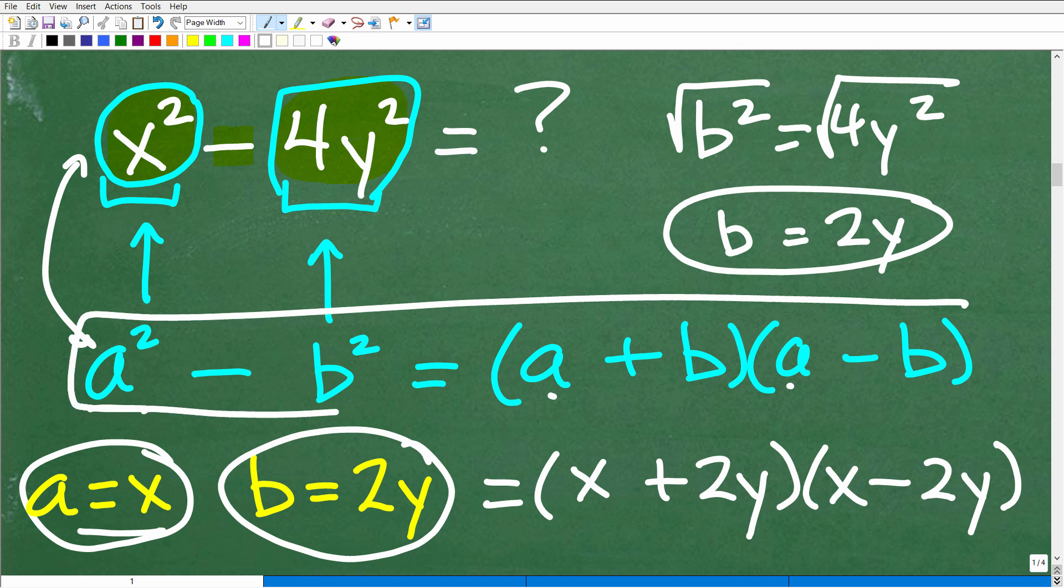Now we just simply need to follow the formula. So a squared minus b squared is going to be a plus b. So what is a? Well, a is x. That's going to be x plus b. b is 2y. And then here we have a minus b. So that's going to be our a is x minus our b is 2y. And we just simply plug in the values like so, and we are done. Again, if you wrote x minus 2y times x plus 2y, that's an equivalent answer as well.